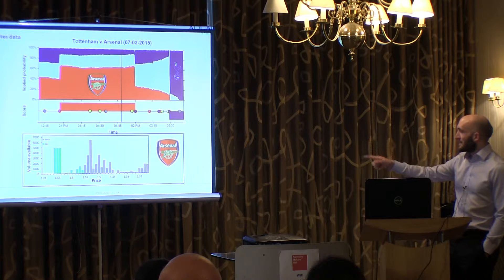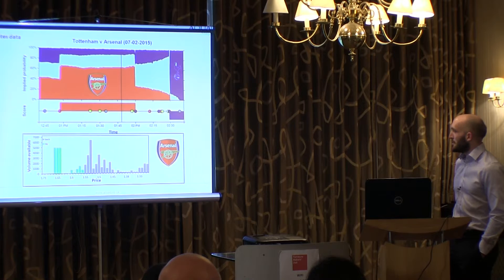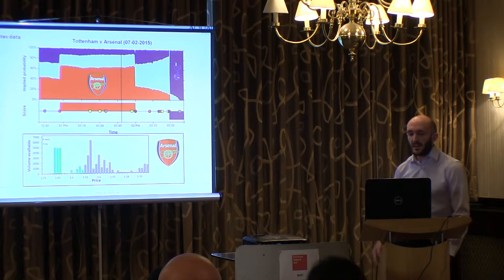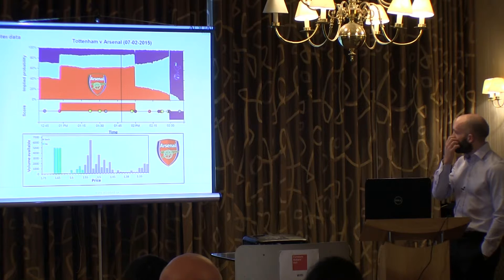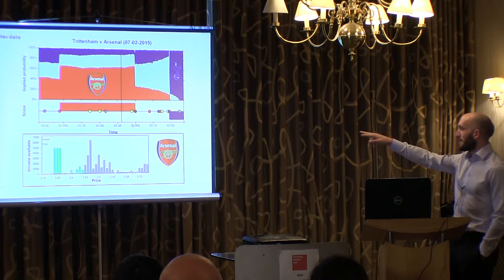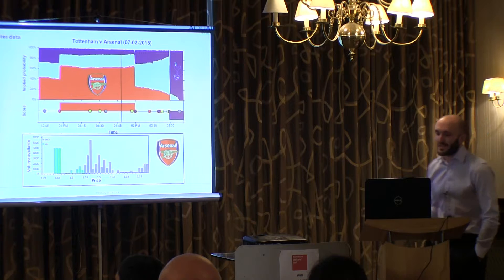If you take a slice during the match, you can see market depth — existing back and lay, bids and asks for Arsenal at that particular time. And then beneath that, the red bars show the score during that time, and these little bubbles represent events — goals scored, yellow cards, substitutions, that sort of thing.